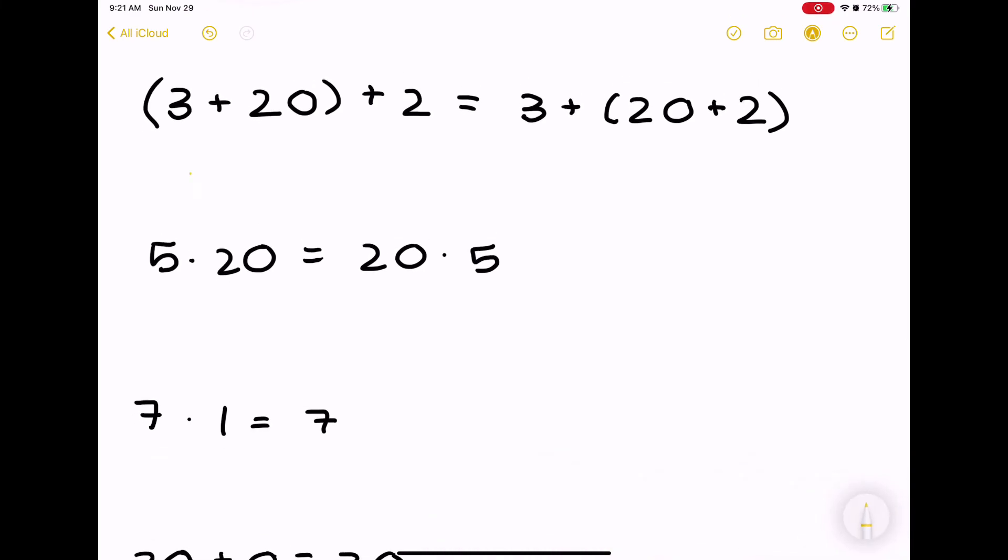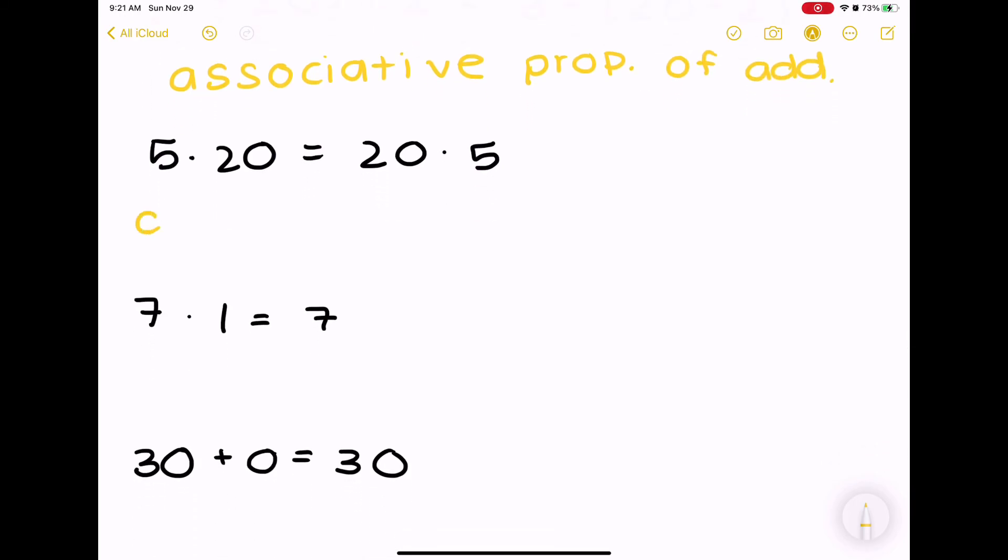Did you do it? Let's check if you got the correct answer. So, the first one is the associative property because the parentheses moved, and if you want to write of addition or of multiplication, that's better just so that it's more specific. The second one is the commutative property of multiplication because it's multiplying, and the numbers switched spots.